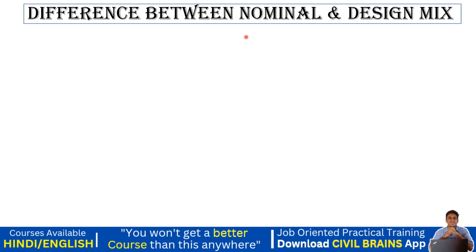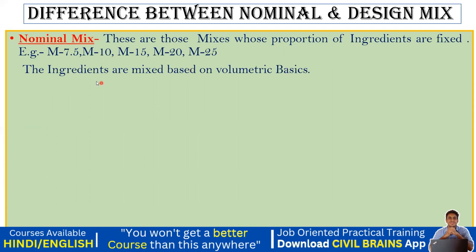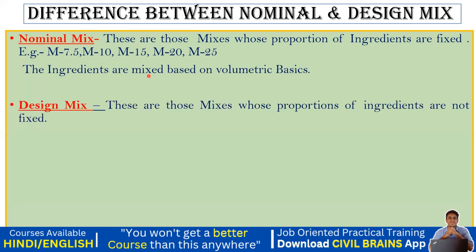What is nominal mix and what is design mix? Nominal mixes are those whose proportion of ingredients are fixed — for M7.5, M10, M15, M20, and M25 we have certain ratios. For M20, we know it is 1:1.5:3; for M25, it is 1:1:2; for M15, it is 1:2:4. The ingredients are mixed based on a volumetric basis — we use volume batching, taking a bucket and measuring cement, sand, coarse aggregate, and water by volume.